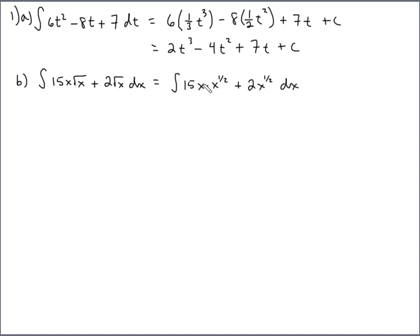Okay, then we'll have to use our properties of exponents. If we have the same base being multiplied together, we add the power. So this is the first power, that's a one-half power. One plus one-half is three-halves, so we can write this as 15X to the three-halves power, plus 2X to the one-half power.